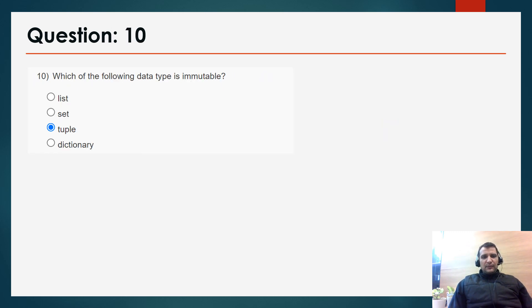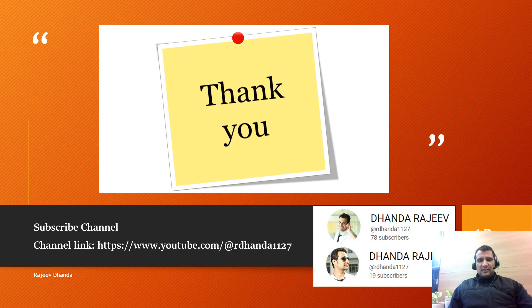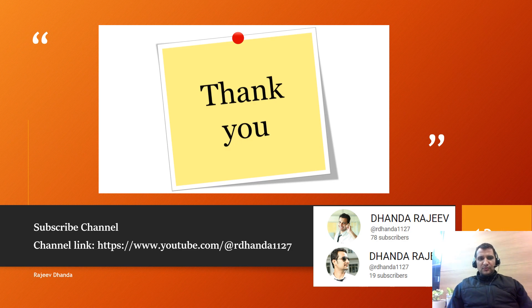Question 10: which of the following data types is immutable? Tuple is immutable — in a tuple we cannot change the value, but in a list we can. So tuple is the correct answer. Thank you everyone. The next assignment will be posted one week prior to the submission date. Please subscribe to the channel if possible. Thank you so much.